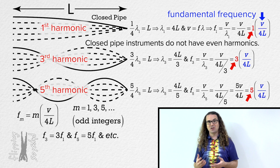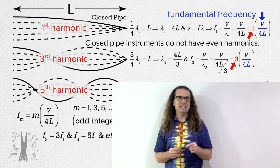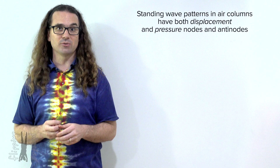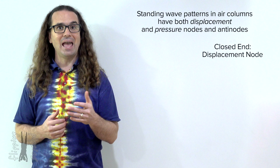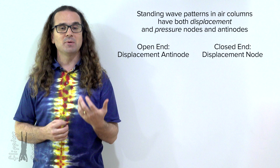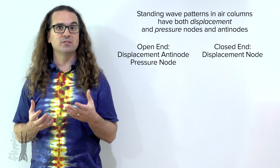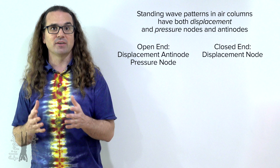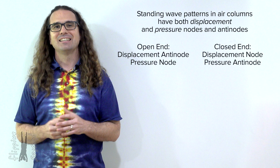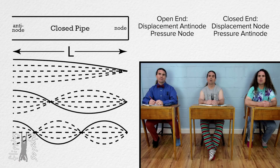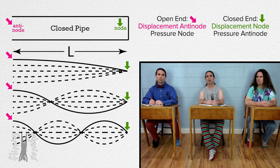There are a few details we glossed over when deriving these equations. Standing wave patterns in air columns have both displacement and pressure nodes and antinodes. A closed end is a displacement node because air cannot move through it, making the open end a displacement antinode. An open end is a pressure node because it is open to the atmosphere and maintains constant atmospheric pressure, making the closed end a pressure antinode. Our illustrations have been showing displacement nodes and antinodes.